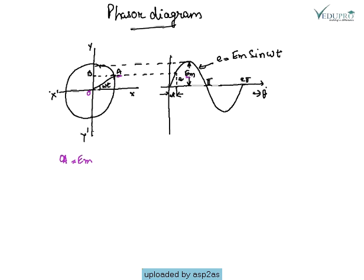So we can say that OA is such a vector which represents the maximum value of alternating current and its angle with X axis, and it gives the phase.